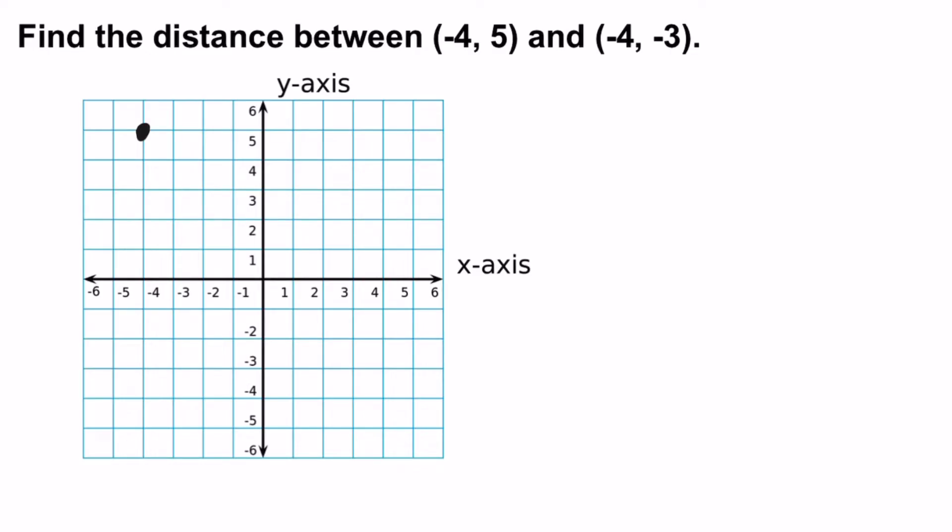The next ordered pair is negative 4, negative 3. So again, you start at the origin, go to the left 4 spaces, and then down 3 spaces. And if you did what I did, your dot should be in the third quadrant.